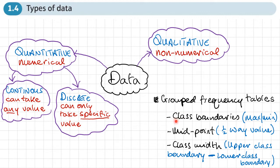And you've probably heard of these before. So the first one is the class boundary. So when we've got a grouped frequency table, the class boundary represents the maximum and minimum values that can go into any group.